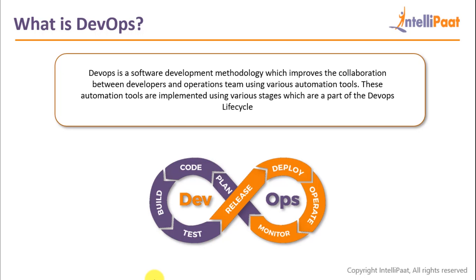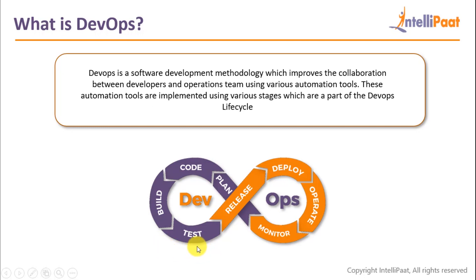This methodology involves a lifecycle. As you can see in the diagram, the first thing you do is plan what you have to do, then you code your way in, then you build the code. Building the code means — if you have a Java file, for example, you'll have to create a jar file or an executable file out of that. That is called building. And then you will be testing your code.